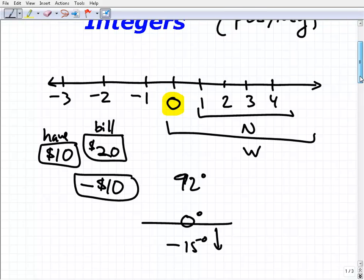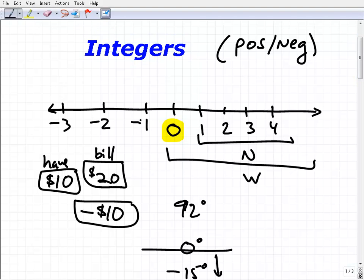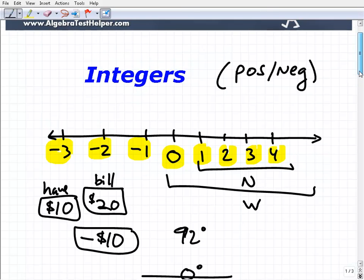But the most basic type of negative numbers are the integers. The integers actually are these numbers here: negative one, negative two, negative three, zero, one, two, three, four, on and on. So these are the integers—very specifically, these sets of numbers.